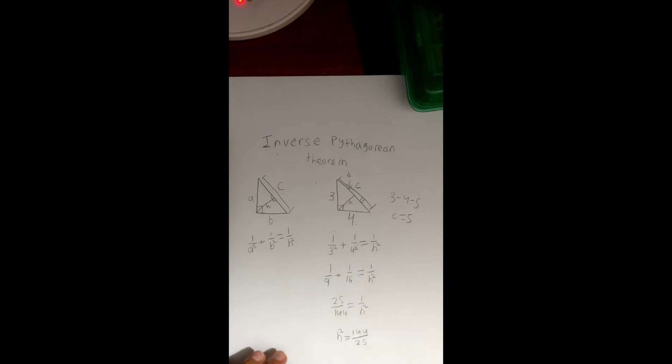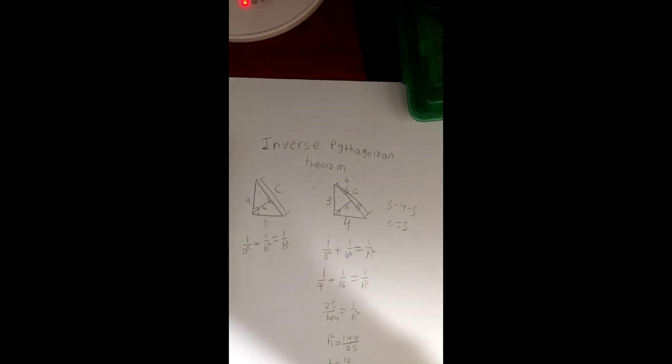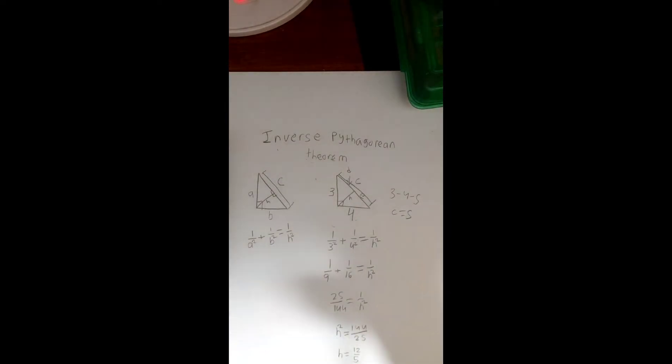Now when you solve for your value of h, you would get a value of h equals 12 over 5, or obviously you could get the negative 12 over negative 5, but basically you don't do it with negative distances.